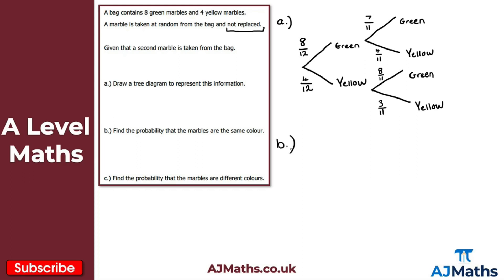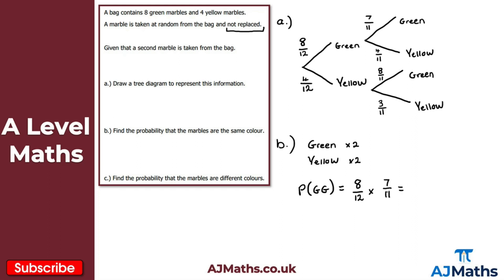For part B, we need to find the probability that the marbles are the same colour. There are two possibilities: green and green, or yellow and yellow. The probability of getting two greens, P(GG), would be 8/12 times 7/11.